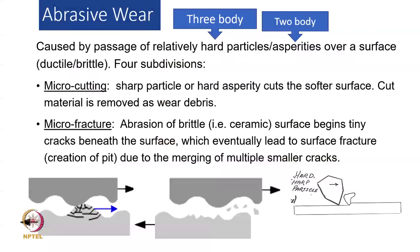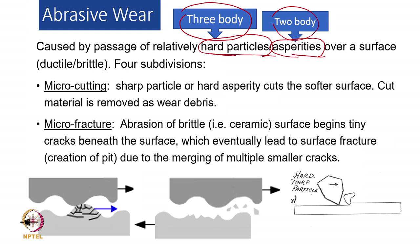Abrasive wear can be divided into 3-body abrasion or 2-body abrasion. We divide it this way because there is a possibility of hard particles or asperities. Asperities will be on a surface itself — that means one surface will be interacting with the other surface via asperities, which is called 2-body abrasion. While if there are hard particles coming out of adhesion or from the environment, that situation will be called 3-body abrasion.